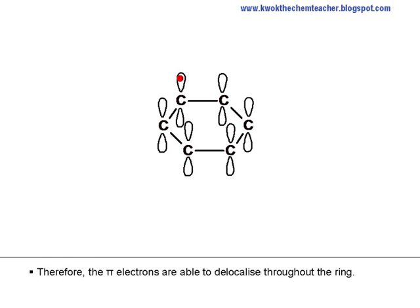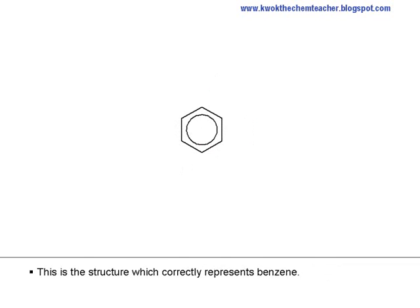Therefore, the pi electrons are able to delocalize throughout the ring. This is the structure which correctly represents benzene. The ring symbolizes the delocalization of pi electrons.